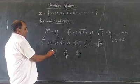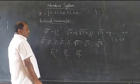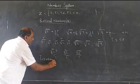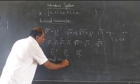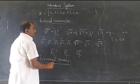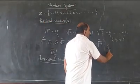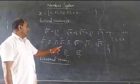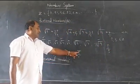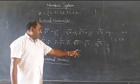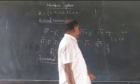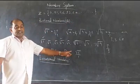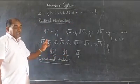So such numbers are called irrational numbers. For a rational number, we must be able to write it in the form P by Q, where P is an integer and Q is an integer. Since square root of 2 is not an integer, we cannot say it is a rational number — so we say it is an irrational number.